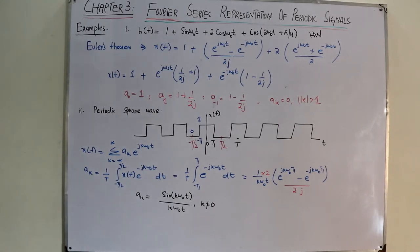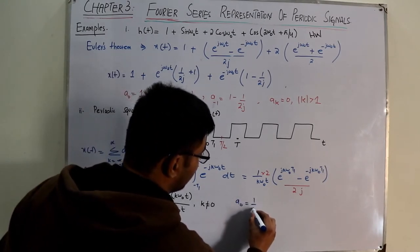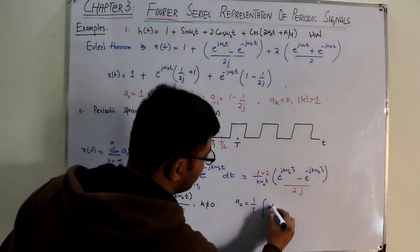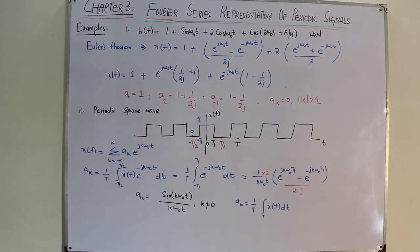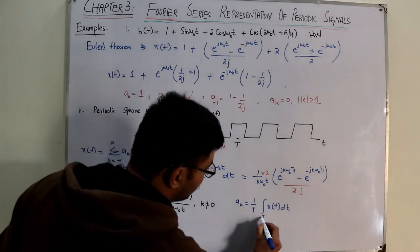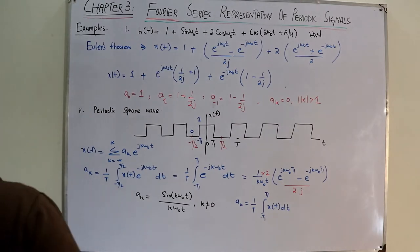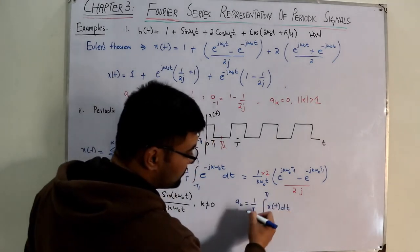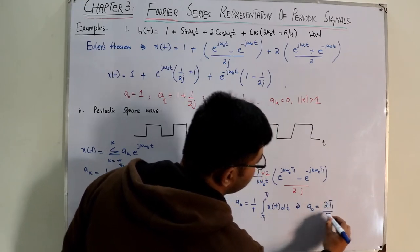For a₀, the exponential term vanishes (k=0), so a₀ = (1/T) ∫₋T₁^(T₁) dt = 2T₁/T.